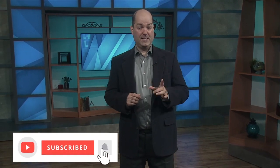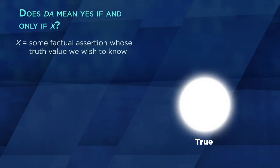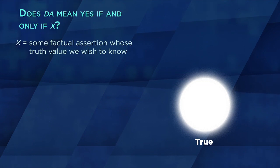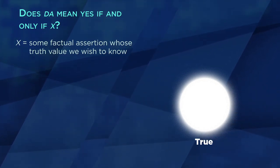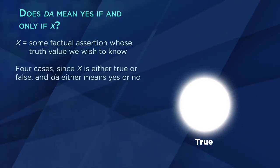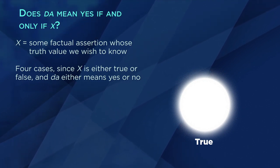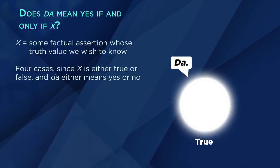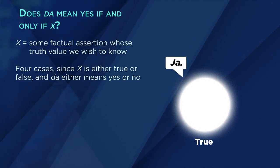The principle we just discovered — that biconditional statements can be used to get direct answers to direct questions, so long as Random is out of the picture — continues to work even if the gods answer with da and ja. To see this, suppose you're definitely talking to True, and suppose X represents some factual assertion whose truth value we wish to know. We can ask, 'Does da mean yes if and only if X?' It turns out that an answer of da means that X is true, and an answer of ja means that X is false. You'll need to consider four cases to verify this — the statement X is either true or false, and da either means yes or no. When X is true, the True god will answer da regardless of whether da means yes or no, and when X is false, he will answer ja regardless of whether ja means yes or no.